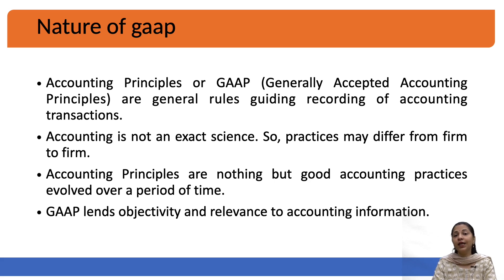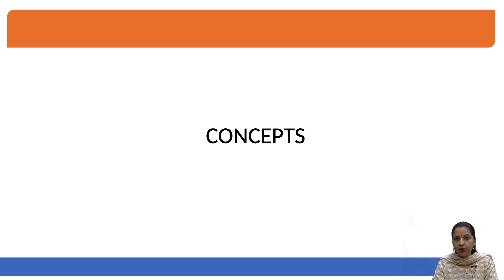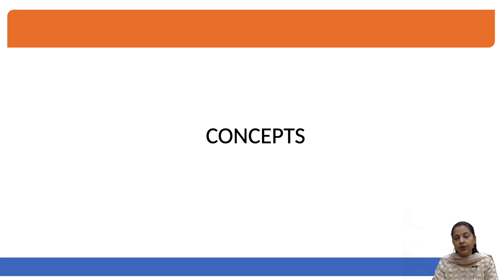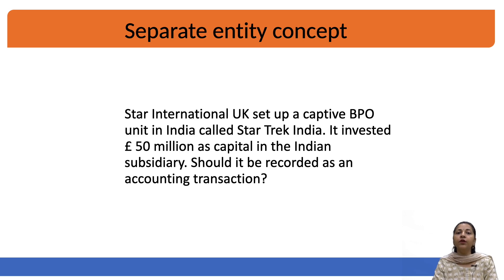When you follow these principles and standards, the output in the accounting books will be in a comparative form, making it easier to compare financial data from the relevant books of accounts. This is the nature of Generally Accepted Accounting Principles. We will now move on to the concepts of financial accounting. In this discussion, we will look at certain examples and discuss them one by one. The first concept when making financial accounting books is called the separate entity concept.